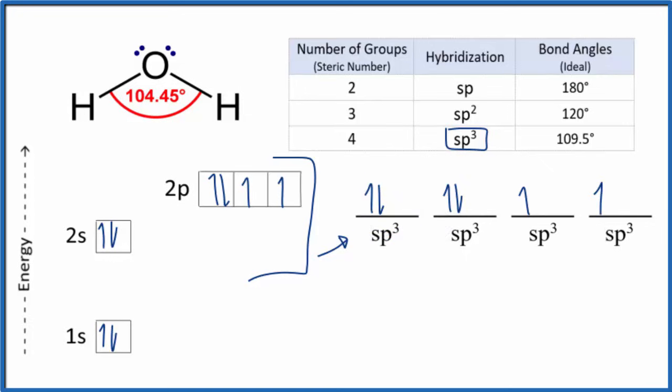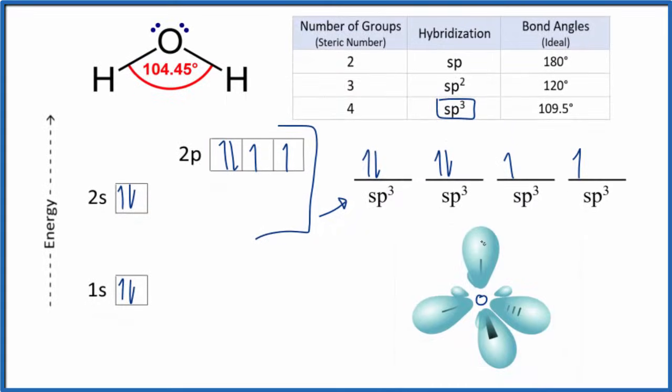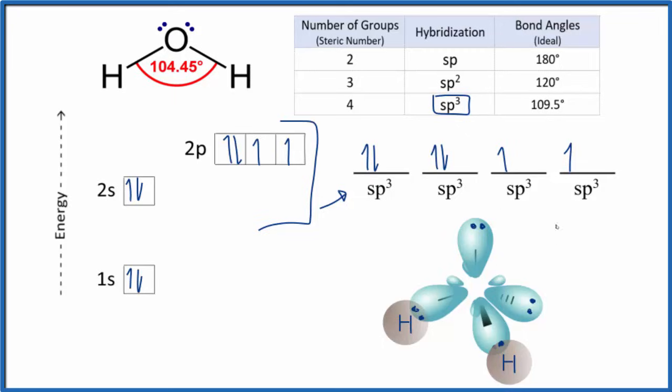If we look at the orbital overlap diagram it'll look like this. We have the one, two, three, four orbitals. Let's put a lone pair here and then here, and then we have these two electrons here. So we put one in this orbital and one here. Now we can take one hydrogen, we can put it right here, and we'll put the other one right here.